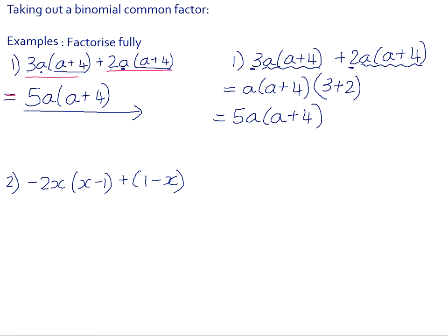In number 2, we cannot add these two things together because they are unlike terms. So our only option at reducing the number of terms here is to see if we could factorise it in order to reduce the number of terms. And now we need to be a little bit cautious because x minus 1 and 1 minus x are not the same kind of terms. So we cannot say at the moment that those are a highest common factor.